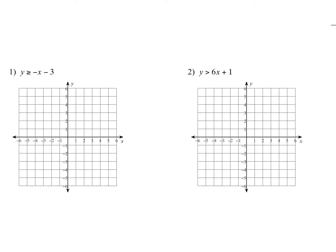Let's do some quick practice — this is review from eighth grade. For example one, both equations are in slope-intercept form. The y-intercept is at negative three, and the slope is negative one, so fall one, run right one — or rise one, go left one. Continue this pattern across the graph since we'll be shading one half of it.